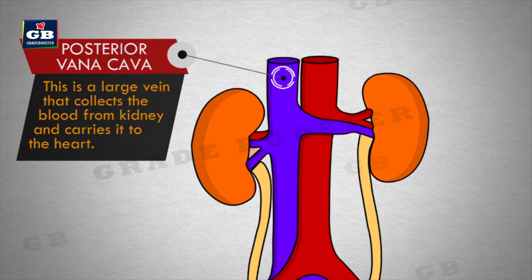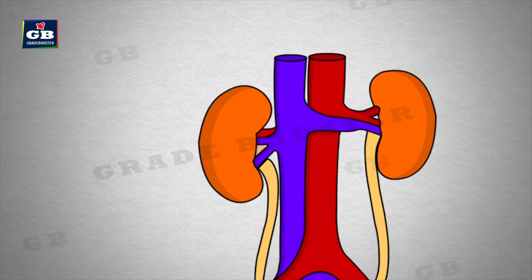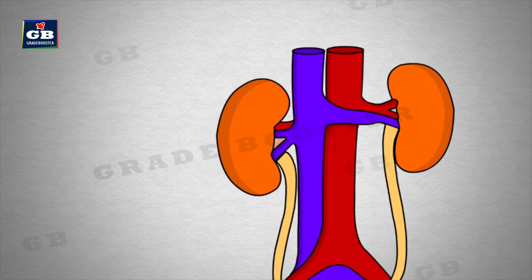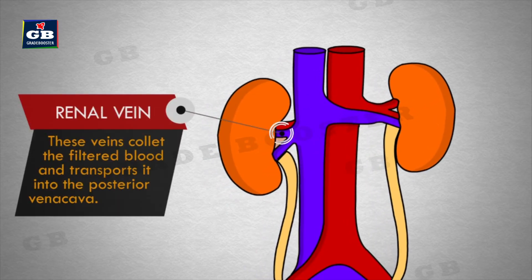Posterior vena cava is a large vein that collects the blood from the kidneys and carries it to the heart. Renal veins collect the filtered blood and transport it into the posterior vena cava.